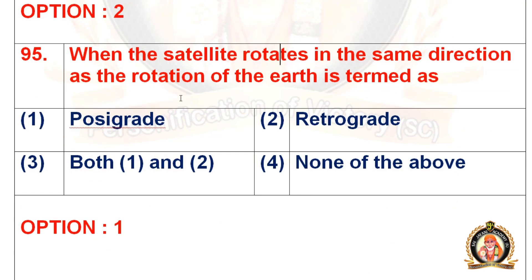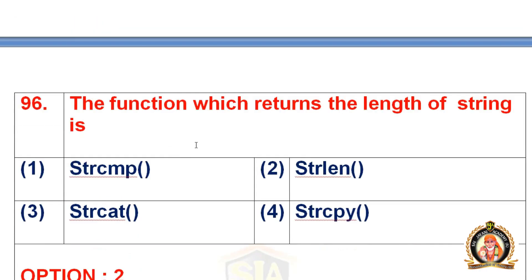Move on to the 95th question: when the satellite rotates in the same direction as the rotation of the earth, it is termed as dash. Options: posigrade, retrograde, both, or none of the above. The right option for the 95th question is the first option — posigrade. For detailed solutions, visit our YouTube channel SaiGen Academy.